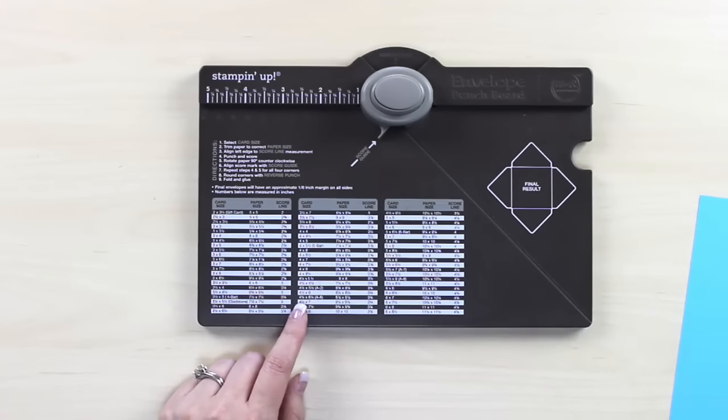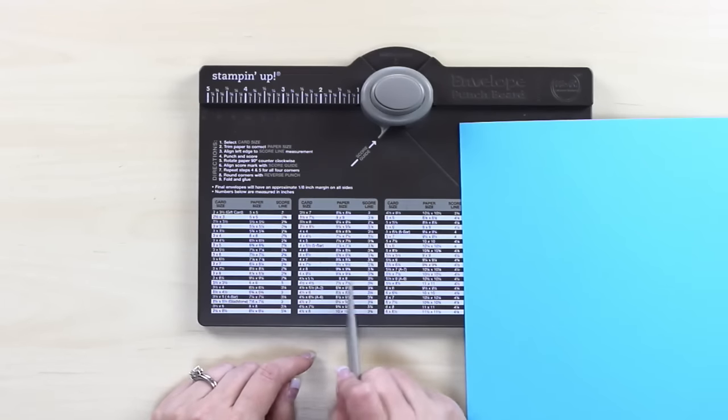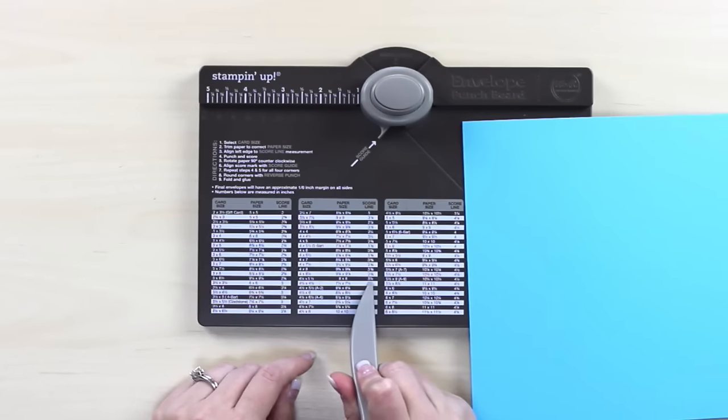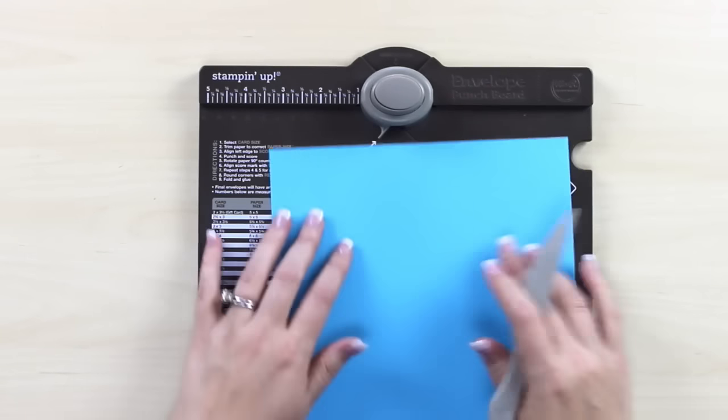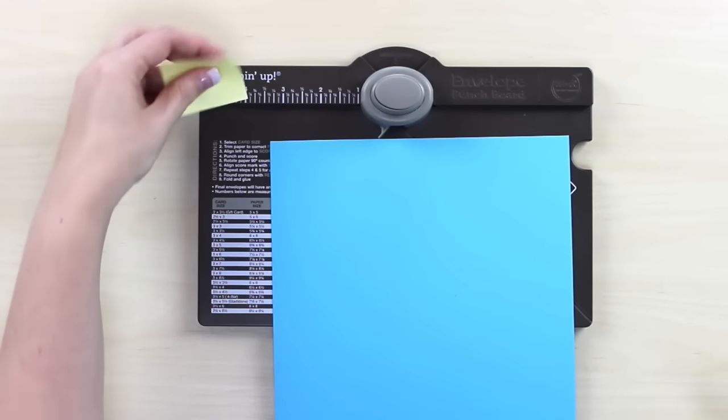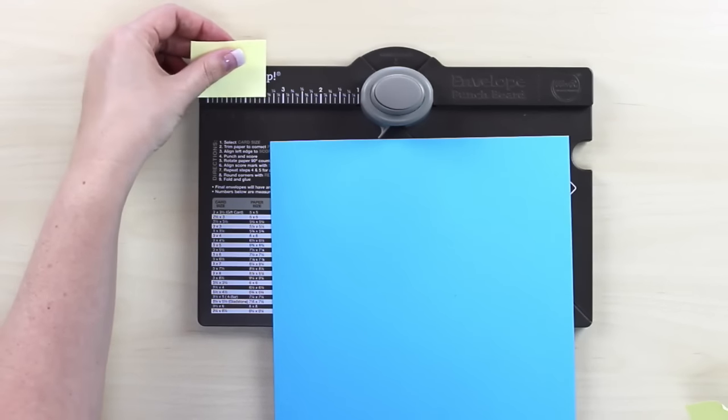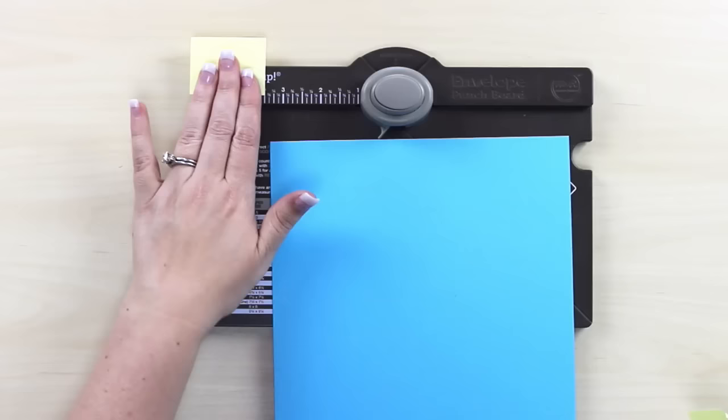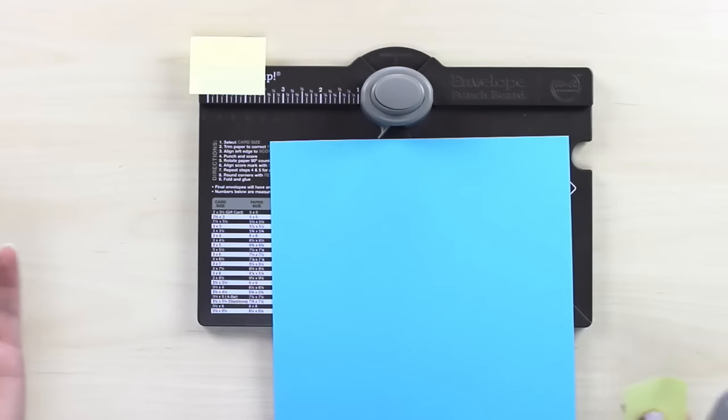So to begin we need a piece of card stock that's going to be eight by eight and the only measurement we need to know at the beginning is three and a half inches. So because I use this size more than anything else, let me show you what is normally sitting on my envelope punch board. And that would be a post-it note. I cannot craft without post-it notes. They are to me one of the best tools you could ever use.